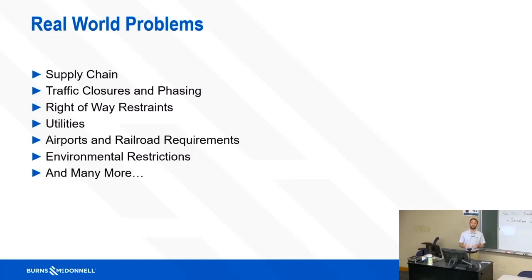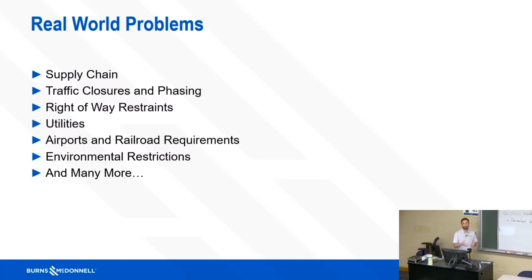There are also a whole list of other issues that can make projects go sideways: supply chain problems getting needed supplies on time, increased costs, traffic closures and phasing — you might have to design two separate cases because you need to build half the bridge first. There are questions of where you can put your piers and what space is available, right-of-way access, utilities in the way, avoiding airports or railroads, and environmental restrictions.